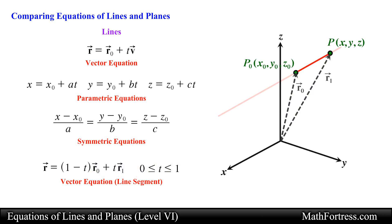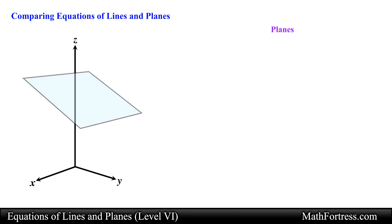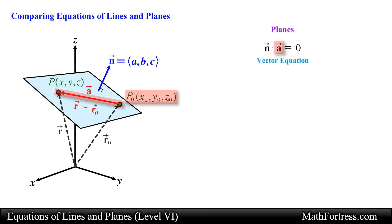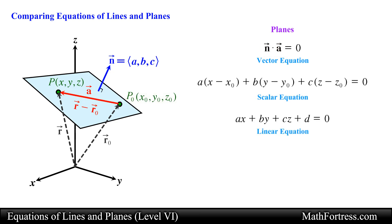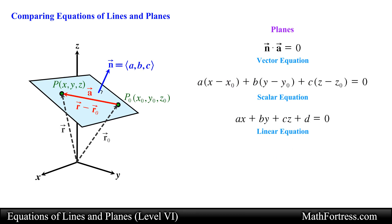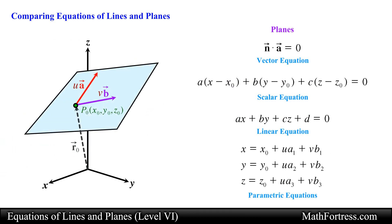There are also three ways to describe a plane in space. The first way is by using a vector equation, which requires a point on the plane and a vector normal to the plane. The second way is by using the scalar equation, which also requires a point on the plane and a vector normal to the plane. The third way is by using parametric equations, which require a point on the plane and two non-parallel direction vectors that start at the same point on the plane.